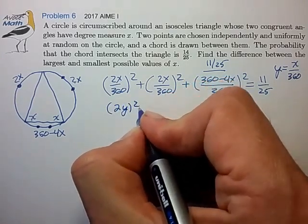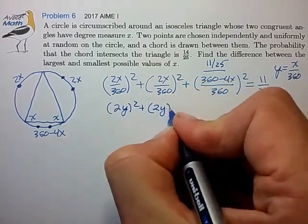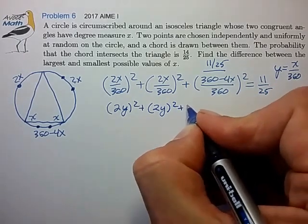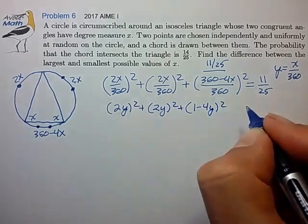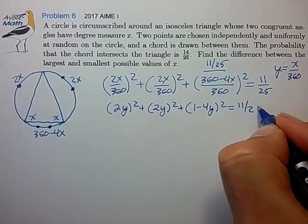We then have 2Y squared plus 2Y squared plus 1 minus 4Y squared is 11 over 25.